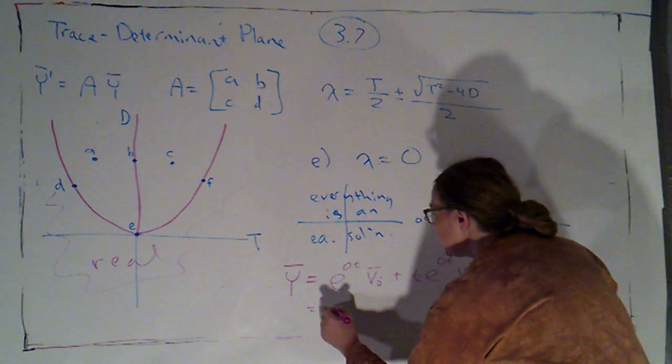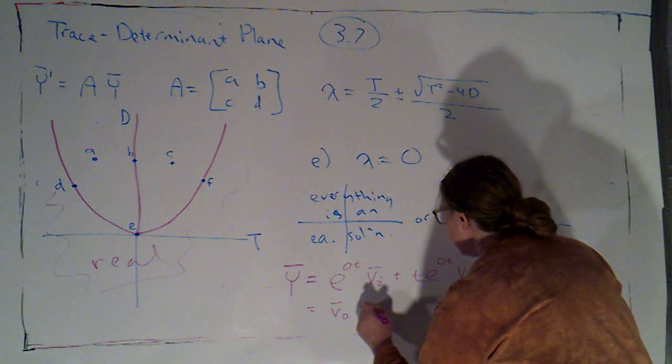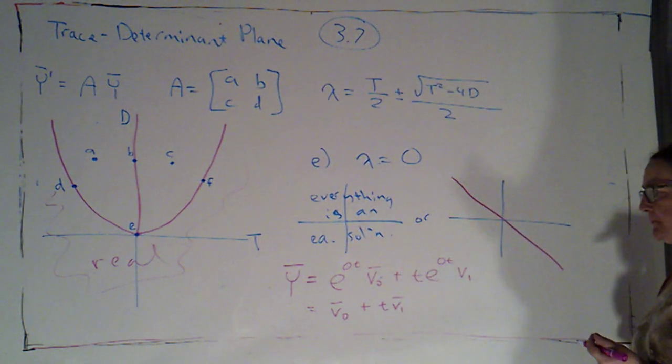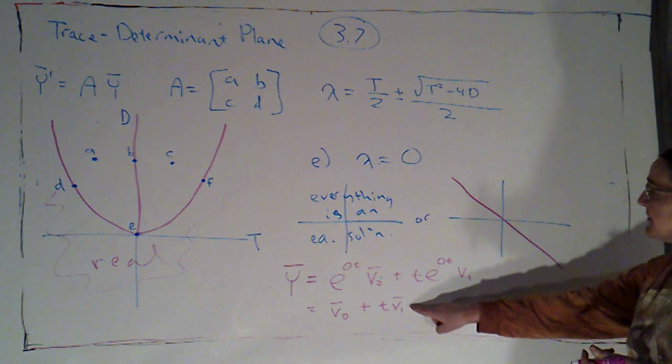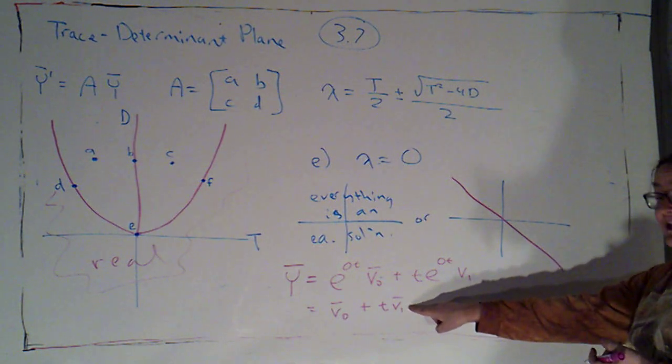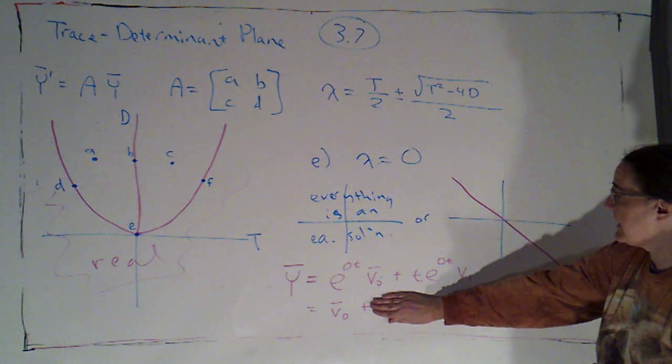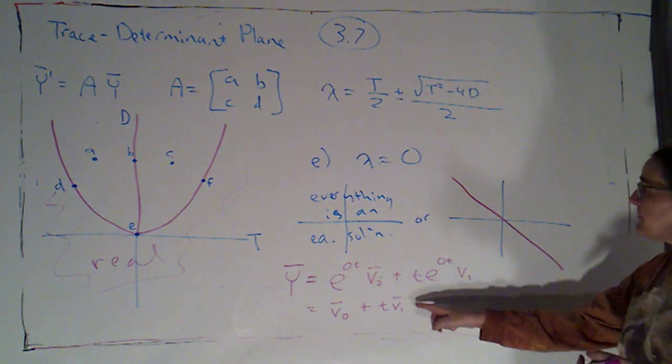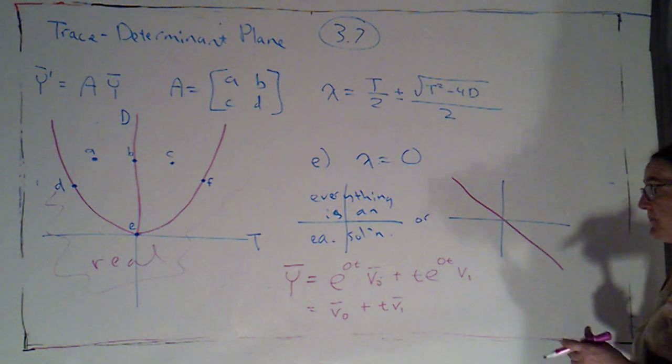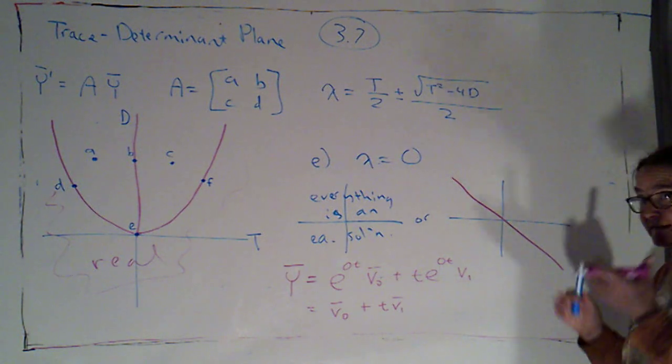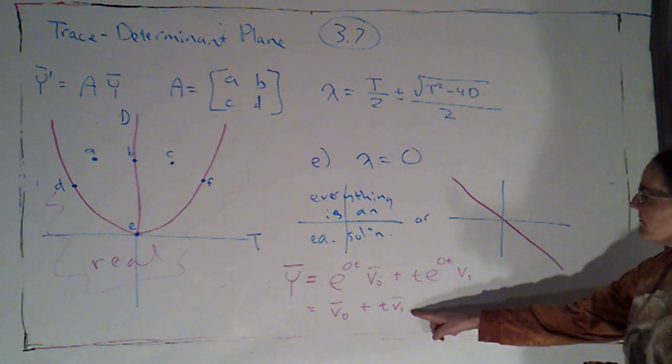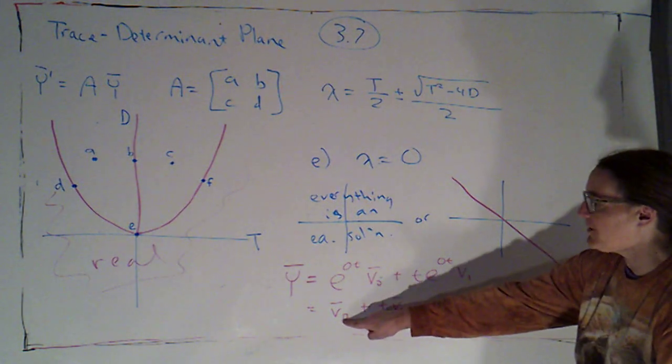But, of course, that's just v0 plus t copies of v1. And I know that v1 is either 0, in which case I'm just getting v0, or v1 is an eigenvector. And since v1 is A minus lambda I times v0, if v1 is 0, then v0 is an eigenvector.